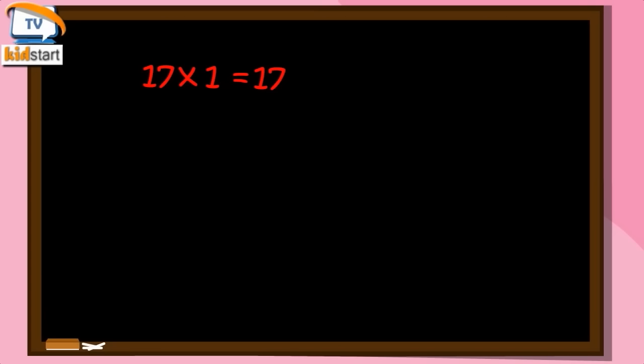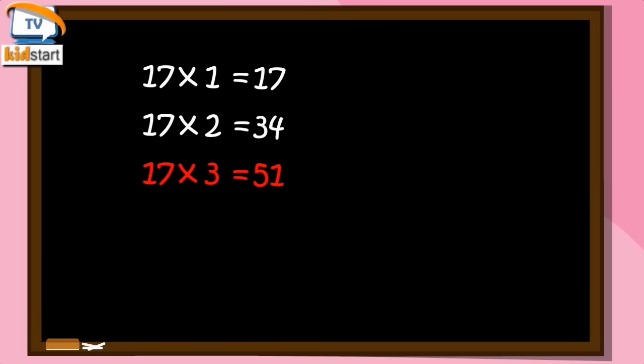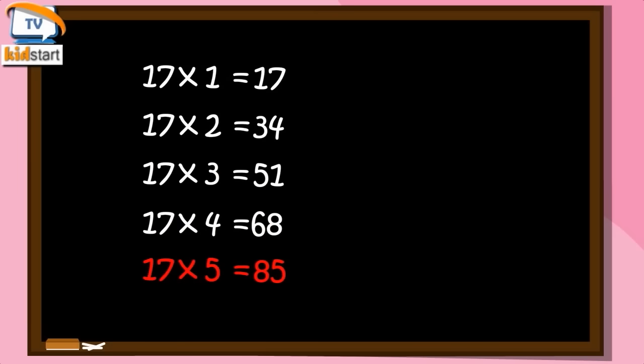17 ones are 17. 17 twos are 34. 17 threes are 51. 17 fours are 68. 17 fives are 85.